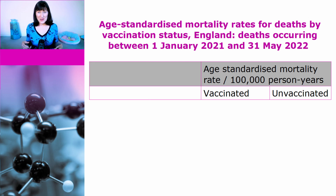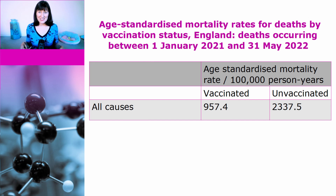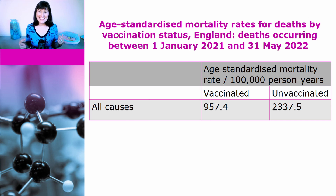That definition is sometimes used when assessing efficacy of vaccines, but it is never used when assessing safety. When we look at deaths from all causes, we see the age-standardised mortality rate for vaccinated people is 957.4 per 100,000 person years, compared with 2,337.5 for the unvaccinated. So obviously the unvaccinated are much more likely to die than the vaccinated. However, this does include COVID deaths, so maybe it isn't a fair comparison, because we know that the COVID vaccine is going to reduce COVID deaths.